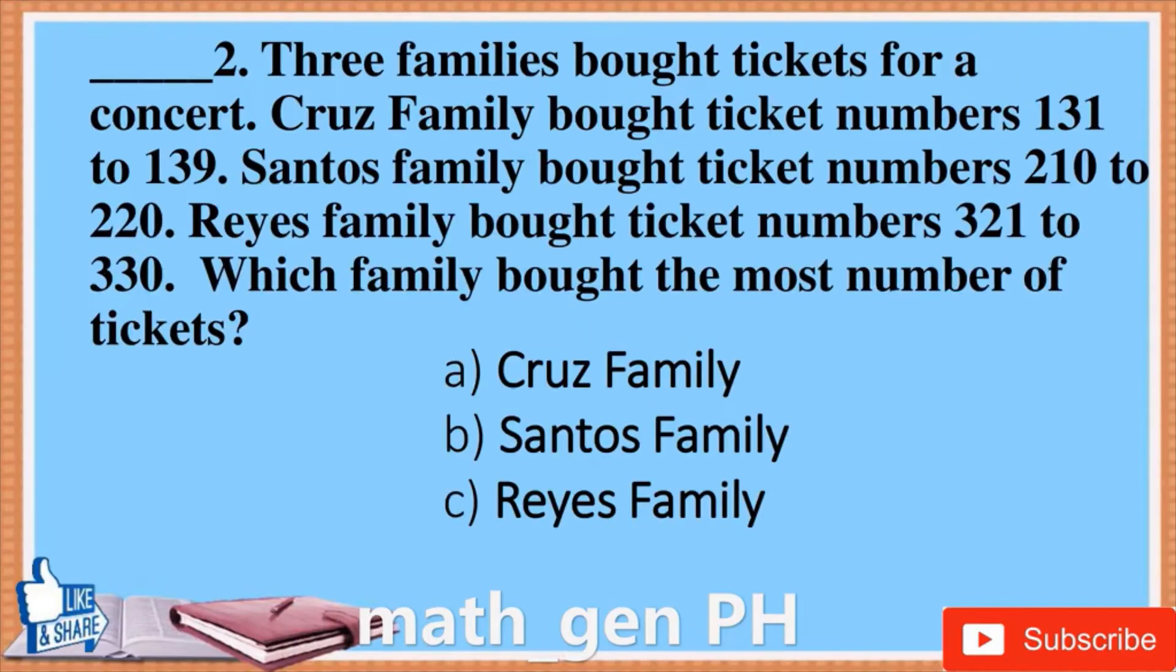Question 2: Three families bought tickets for a concert. Cruz family bought ticket numbers 131 to 139. Santos family bought ticket numbers 210 to 220. Reyes family bought ticket numbers 321 to 330. Which family bought the most number of tickets?